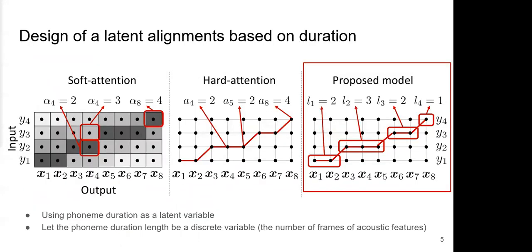To avoid fatal alignment errors, we design monotonic alignments based on phoneme duration. To design monotonic alignment, we incorporate phoneme duration as a latent variable to N2 and TTS. As with hard attention, our method can realize monotonic alignments. On the contrary, units of alignments are linguistic feature-level instead of acoustic feature-level, so alignments can be constructed more efficiently in our method.